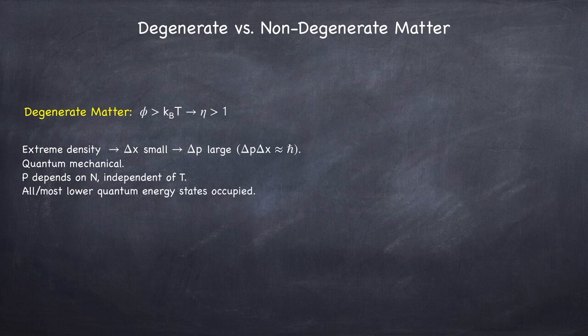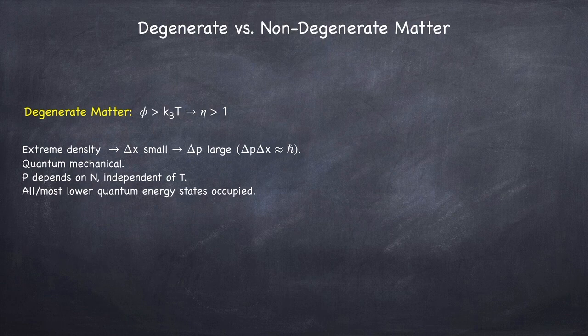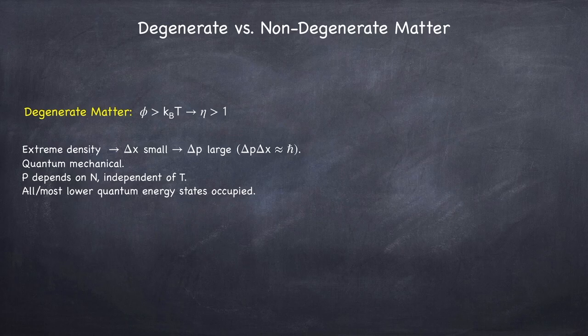The most important characteristic of degenerate matter is that all of the particles are concentrated in the lowest energy states. So another way to say this is that all or most of the lowest energy states are occupied, and the higher energy states are sparsely occupied.